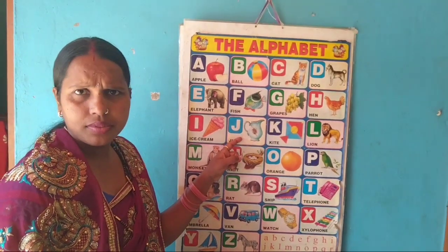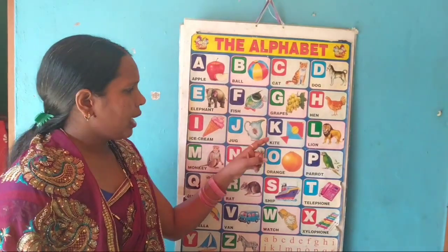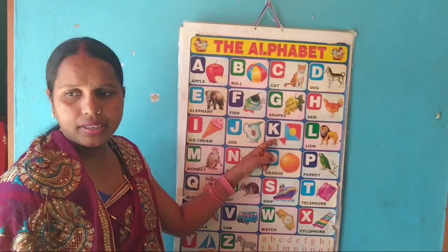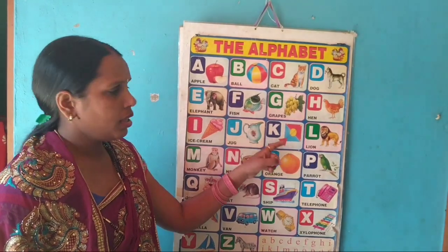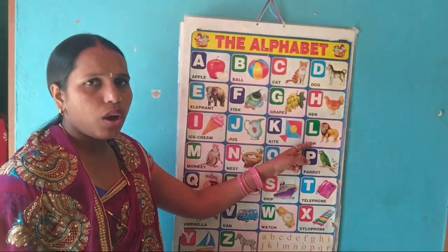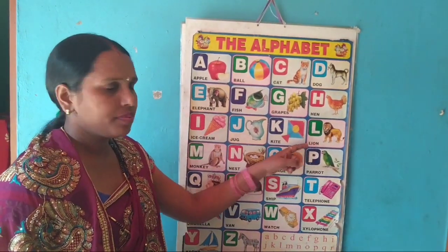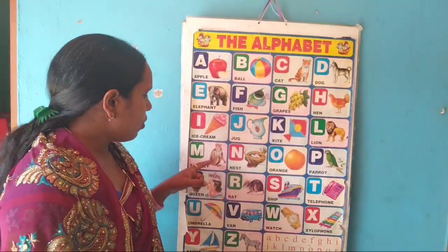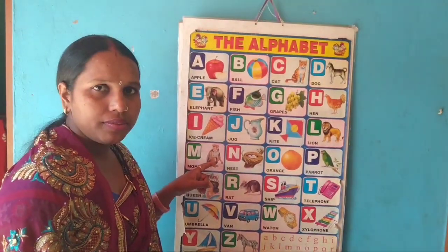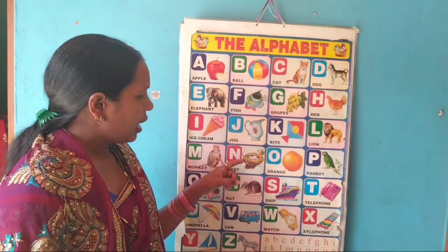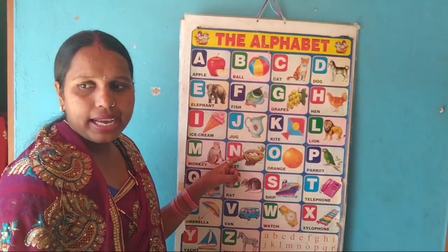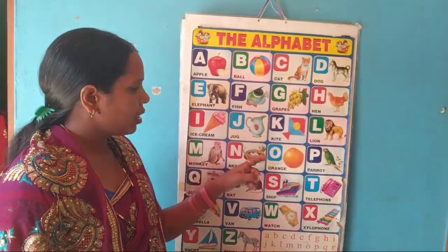J for jug, K for kite, L for lion, M for monkey, N for nest.